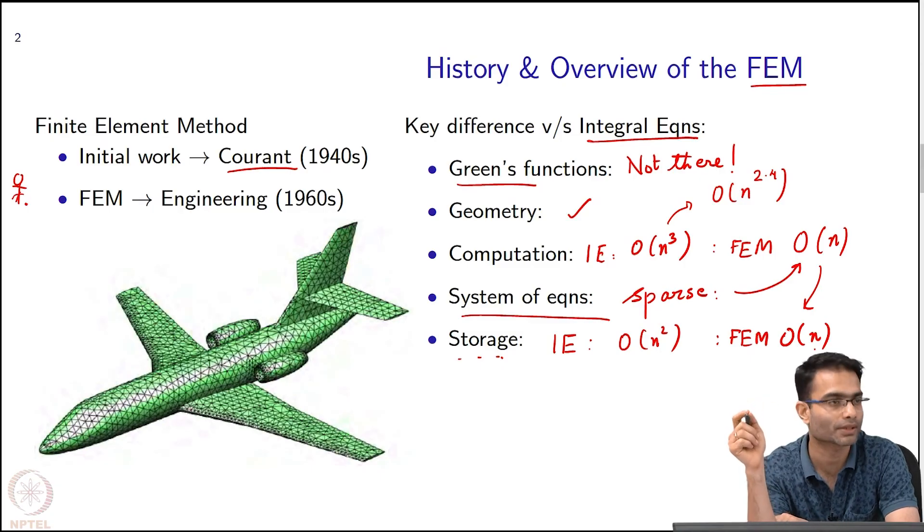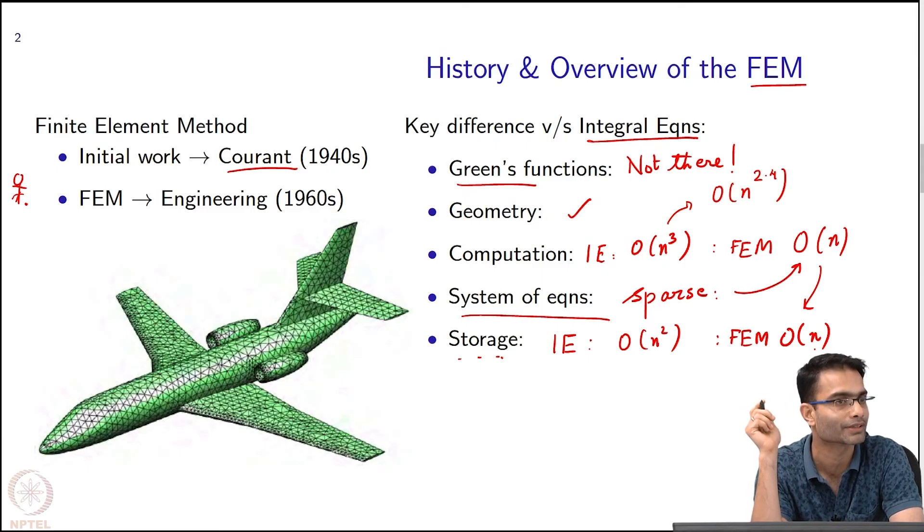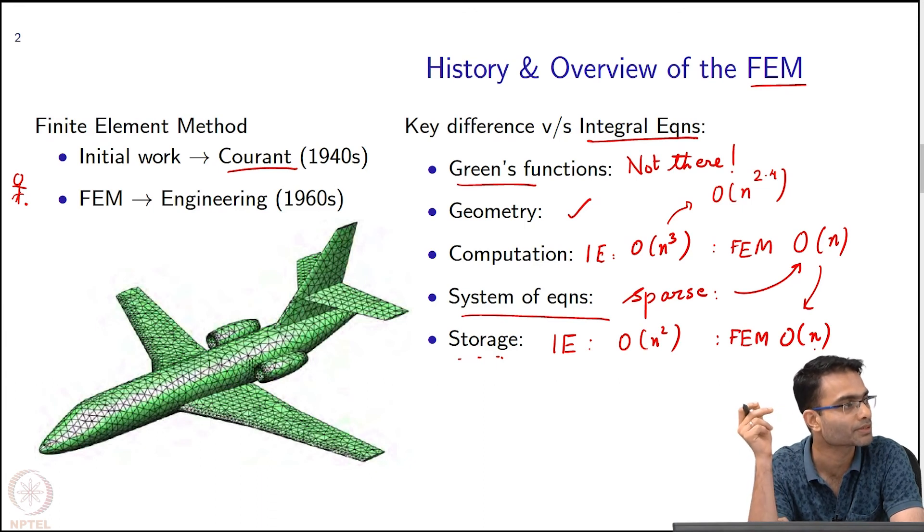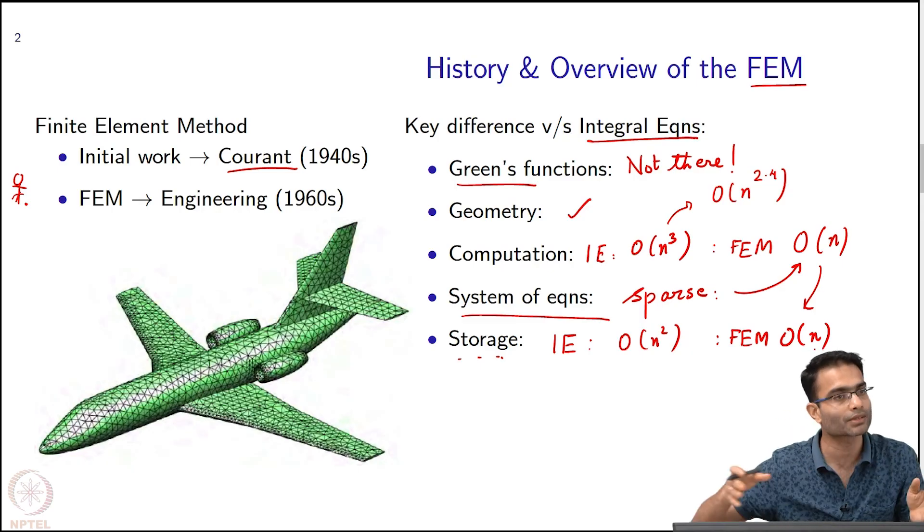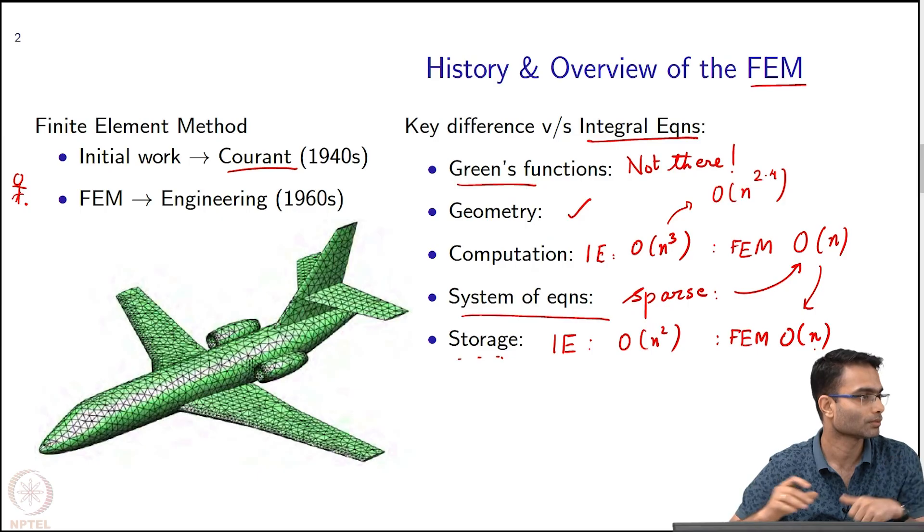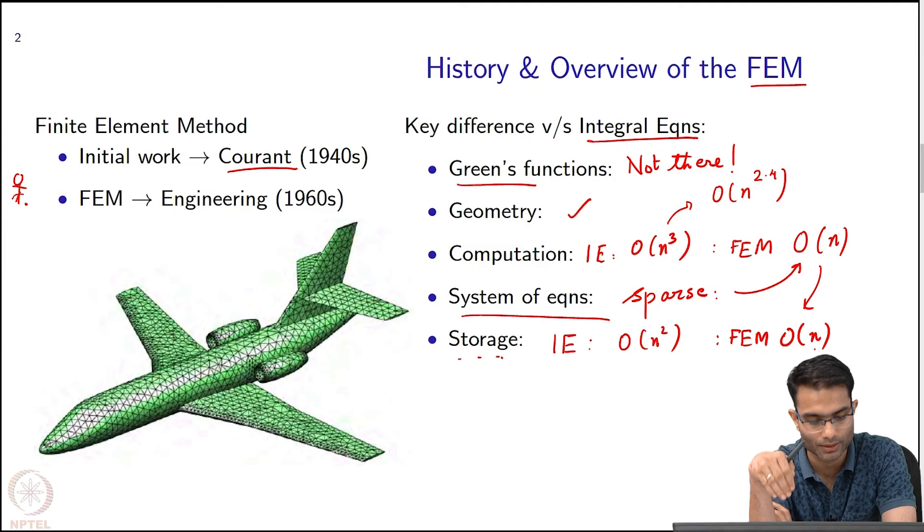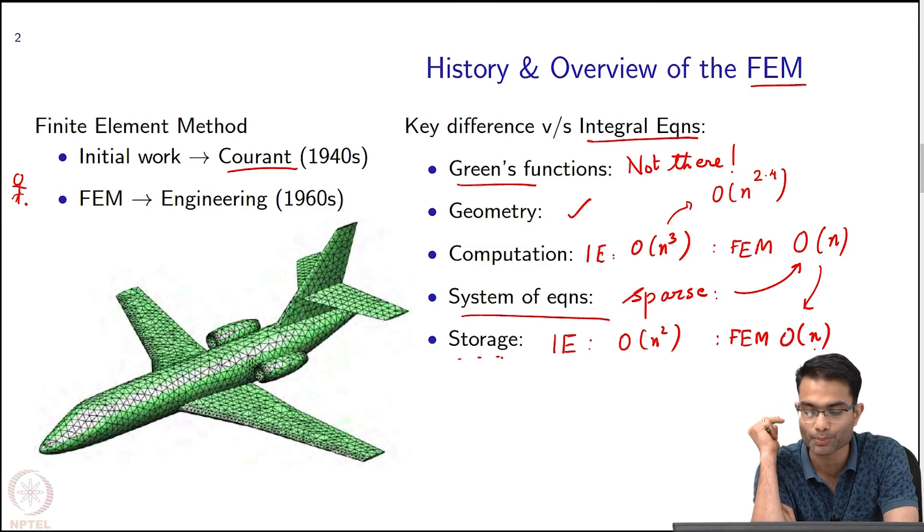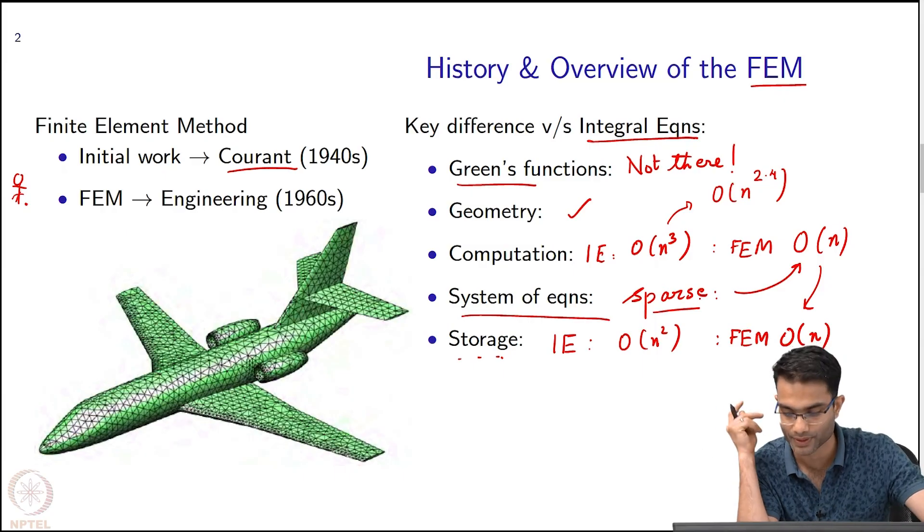Looking at this naturally you should ask a question, if everything is so great about FEM why did we bother studying this integral equation method at all. The answer is that the accuracy that you get with integral equation method is much better. To get the same level of accuracy you would need to discretize finer in FEM than integral equation method. We will see a very good conceptual reason for that as we go along, why is it that way. That's the price that you get for a sparse system of equations. There has to be, there is no free lunch and that's where you lose out.